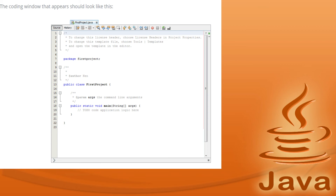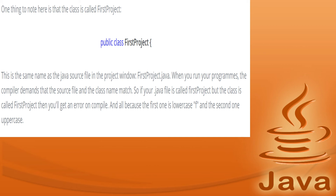Notice that the class is called FirstProject — 'public class FirstProject' — and this is the same name as the Java source file 'FirstProject.java' in the project window. When you run your program, the compiler demands that the source file and the class name must match. If they don't match, it will not compile. Java is a case-sensitive language, so the class name and the file name must be exactly equal.